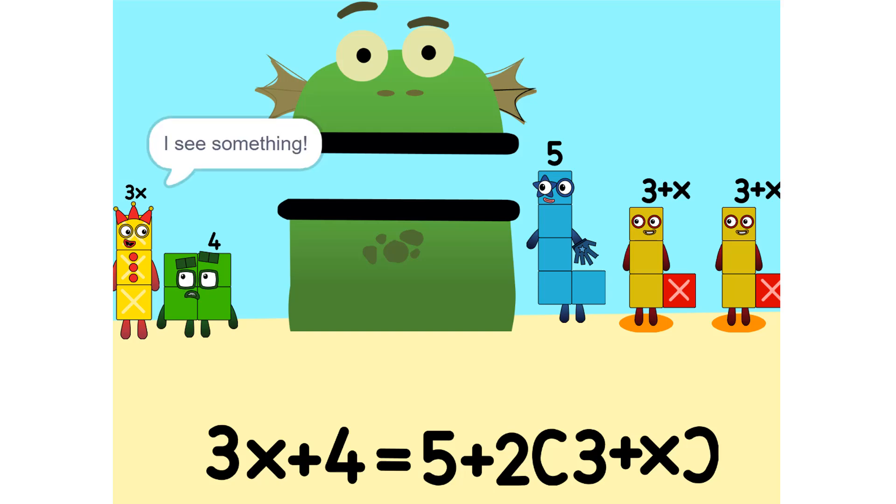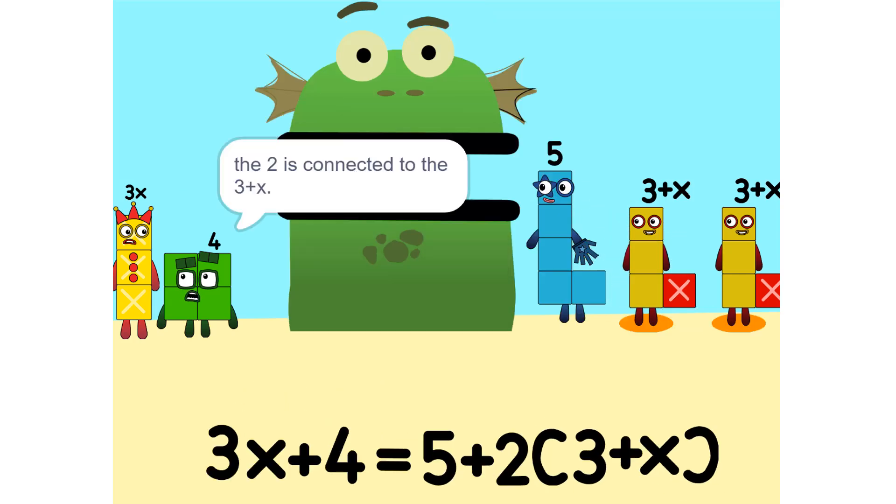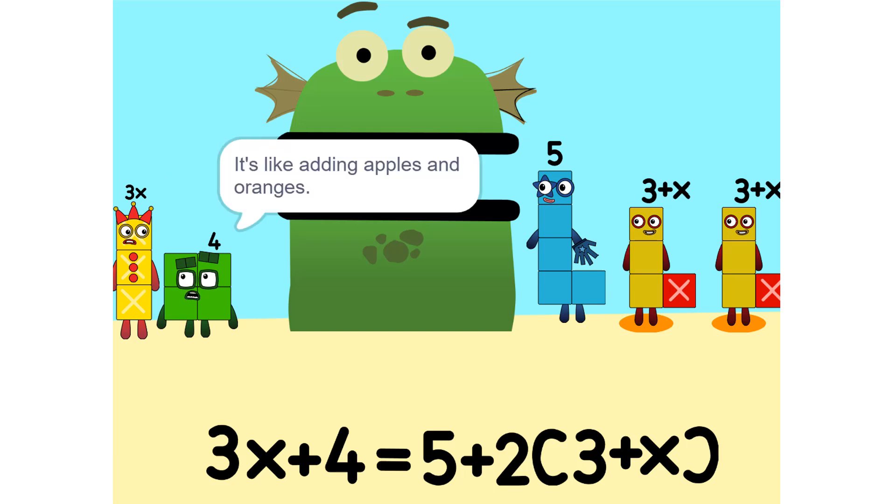I see something. We can add this. Wait, why did that happen? Because the 2 is connected to the 3 plus X. Oh, so it's like adding apples and oranges. You can't. So what do we do?